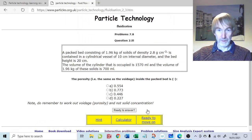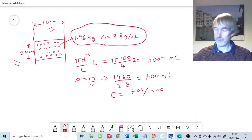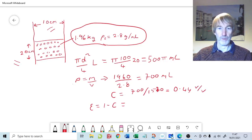1570. So the concentration is 700 divided by 1570, which is 0.44. And that's 1 minus the voidage. Because the voidage equals 1 minus concentration, because concentration is volume of solids divided by total volume, whereas the voidage is the volume of voids divided by the total volume. So that must be equal to 0.56, 56% voidage.